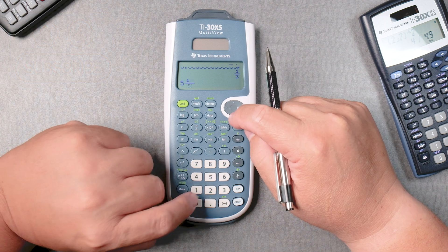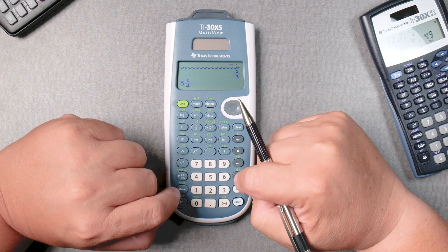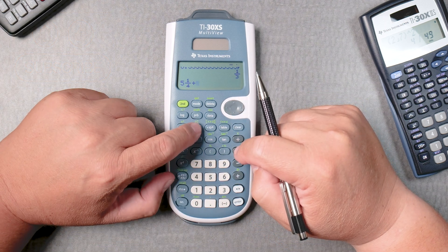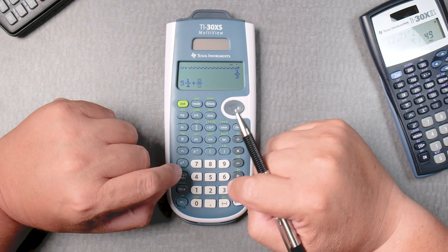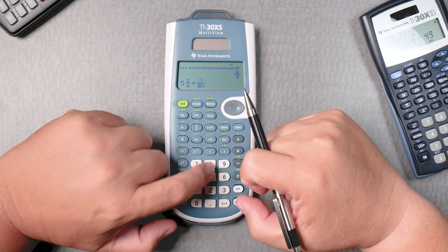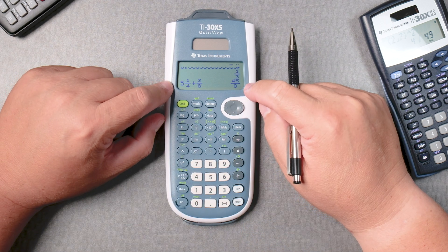Let's say it's 1, go down, 4, go across, plus, then let's say a fraction, 3 over 8. Enter. It gives you 45 over 8.